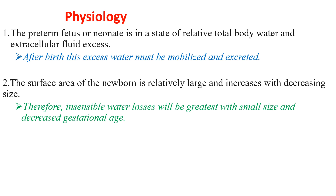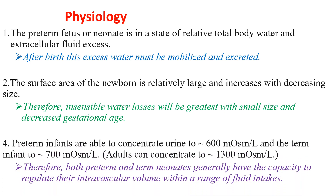The surface area of newborns is relatively large and increases with decreasing size. Therefore, insensible water losses will be greatest with small size and decreased gestational age. Preterm infants are able to concentrate urine up to 600 mOsm/L and term infants up to 700 mOsm/L. Adults can concentrate up to 1,300 mOsm/L.